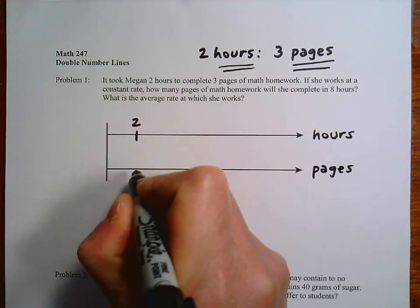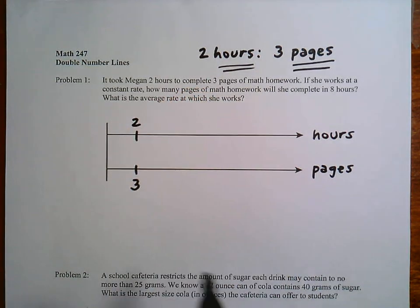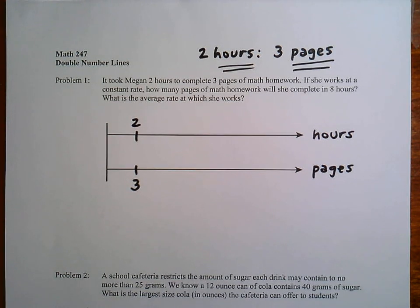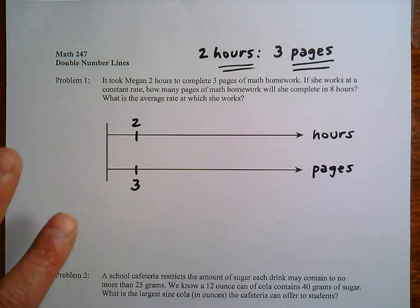So I'm going to jot down the information that's given to us: 2 hours, 3 pages, and we can make them line up like that. Another nice thing about the double number line, you can write above here and below here, so this way they never really interfere. It's not very crowded.